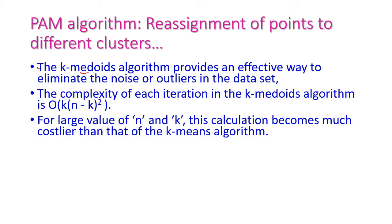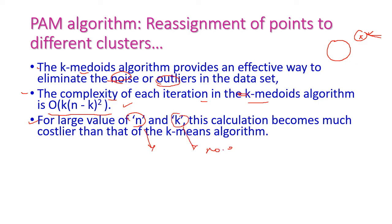The k-medoids algorithm provides an effective way to eliminate noise and outliers in the dataset. Using k-medoids, we can easily identify and remove outliers from our computation. The complexity of each iteration in the k-medoids algorithm is O(k(n−k)²). For large values of n (number of data points) and k (number of clusters), this calculation becomes much more costly than that of the k-means algorithm.